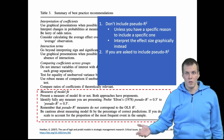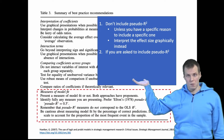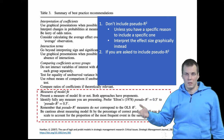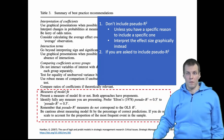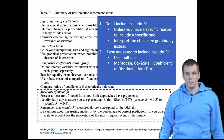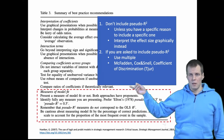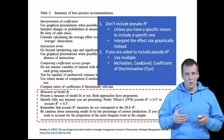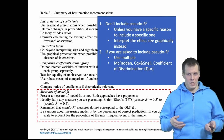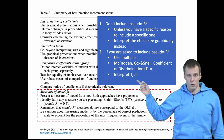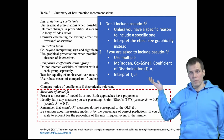If you are asked to include a pseudo R squared — by a reviewer or co-author — include multiple ones: at least McFadden's, Cox and Snell, and Tjur's. I wouldn't use the Nagelkerke because it tends to overestimate OLS R squared and you don't want statistics that make your model look more impressive than it is. Be conservative in what you present. And if asked to interpret one, I would interpret Tjur's R squared.